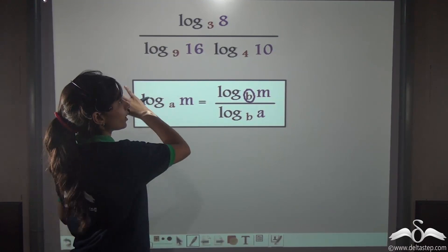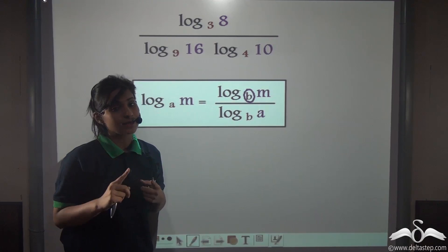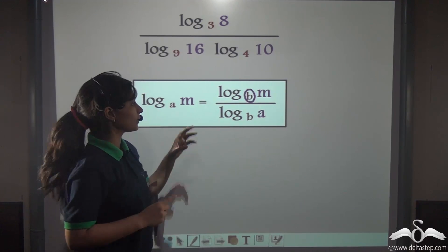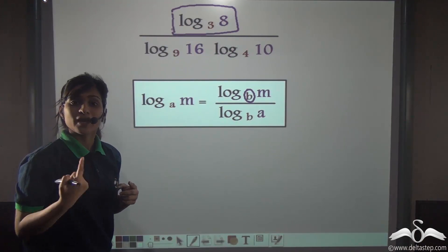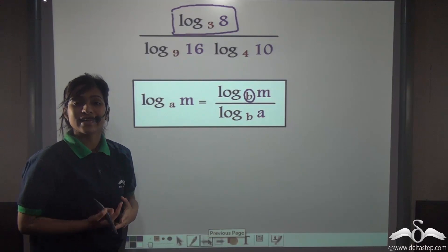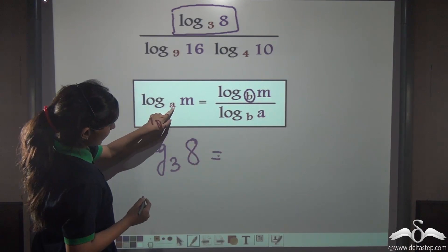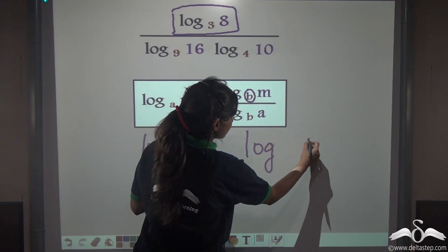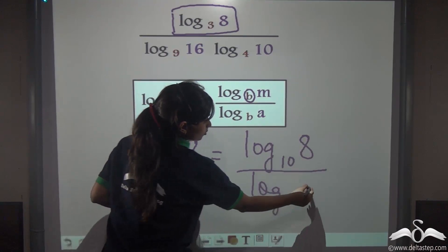Let us think about one common base that we will convert everyone to. You know that common logs are log to the base 10. That is very easy to do. So we will convert all the logs to log to the base 10 — that is, B shall be 10. So we will convert log 8 to the base 3 first. Using the formula, A is 3, M is 8, and B shall be 10. So we get log 8 to the base 10 by log 3 to the base 10.